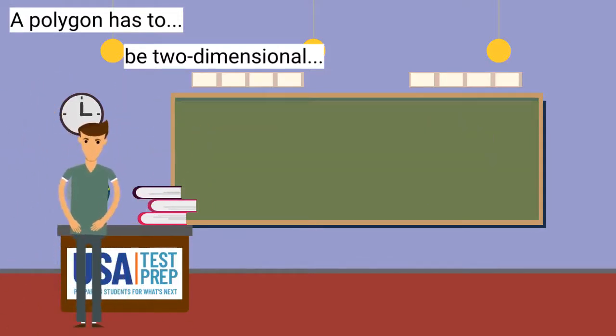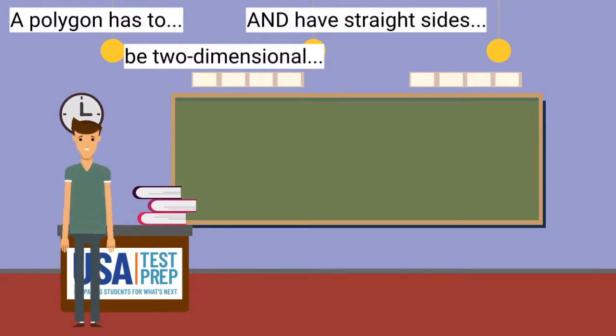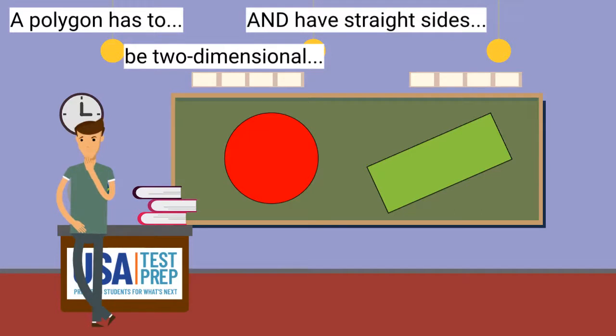A polygon also has to be made of straight sides. Look at these two figures. Which of these is a polygon because it has straight sides? This is a polygon because it has straight sides.